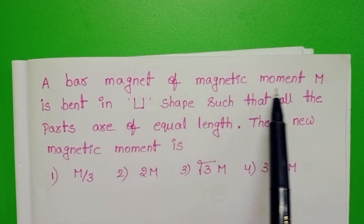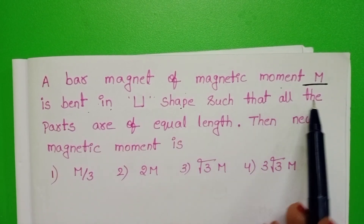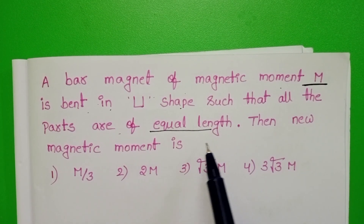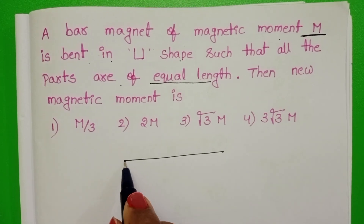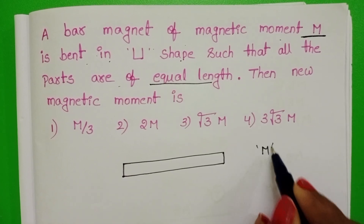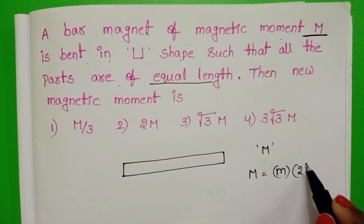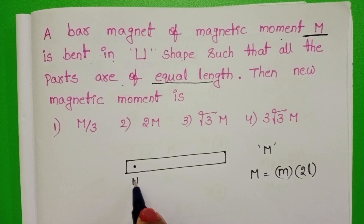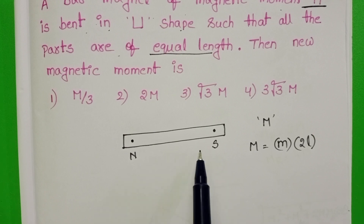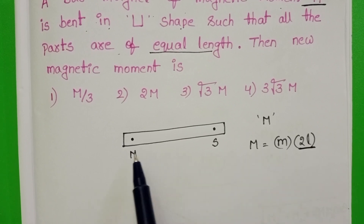A bar magnet of magnetic moment M is bent in a U-shape such that all parts are equal length. The new magnetic moment is to be found. The magnetic moment of the given bar magnet is M. The magnetic moment formula is pole strength into magnetic length. This is the north pole and this one is the south pole. The length between north pole and south pole is called magnetic length, denoted 2L, and the pole strength is M.